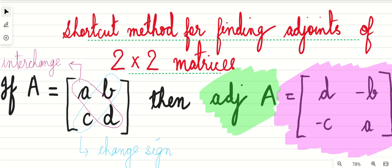Today we're going to see a shortcut method for finding the adjoints of 2 by 2 matrices. You don't need to find the cofactors, find the cofactor matrix, then take the transpose - nothing like that. This is very easy when you get 2 by 2 matrices.